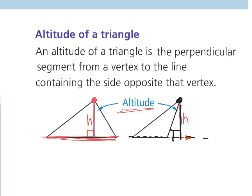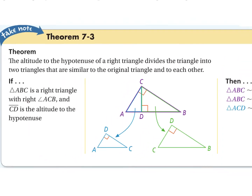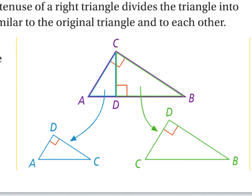Now if I take that idea and go here — this is our first theorem of the day. If I'm taking a look here, I have a right triangle, and I have an altitude drawn from my right angle vertex to the hypotenuse. So if I have an altitude drawn to the hypotenuse, that is going to break my big right triangle into two smaller right triangles.